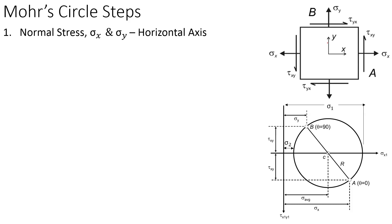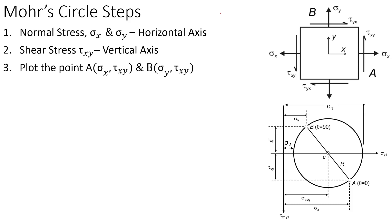The first step to draw Mohr's Circle is to plot the stresses on axes: use normal stress on the horizontal axis and shear stress on the vertical axis. You plot two points — on the x-face you have σx and τxy (call this Point A), and on the y-face you have σy and τxy (call this Point B).